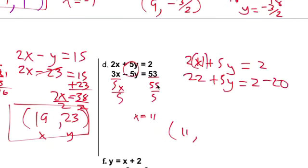Subtract 20. You got 5y equals negative 2. I mean, subtract 22 because I got negative 20 already. And my answer, y, is negative 4.